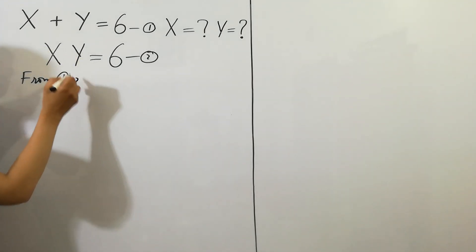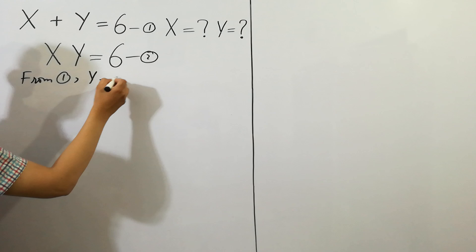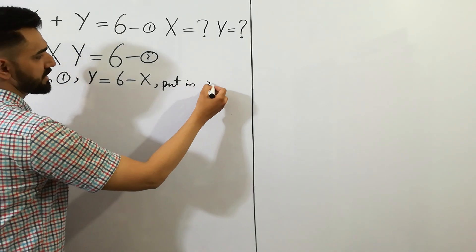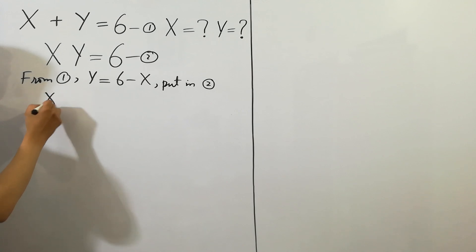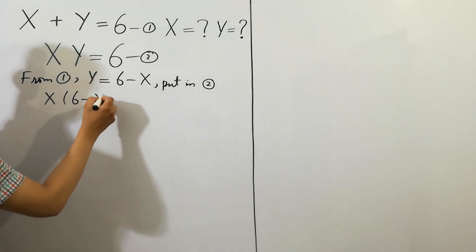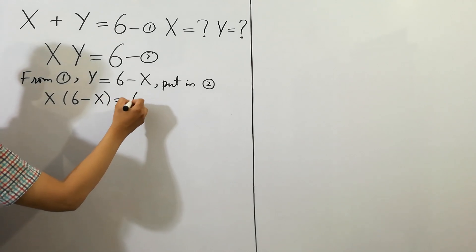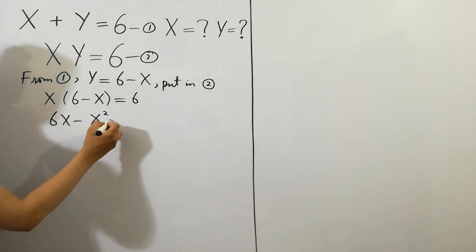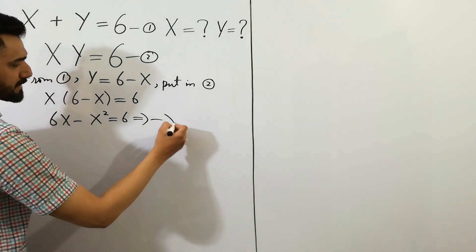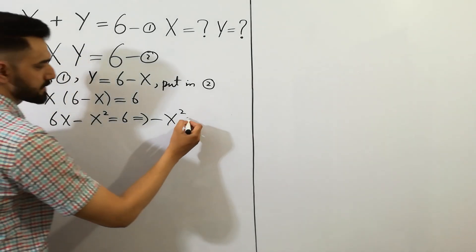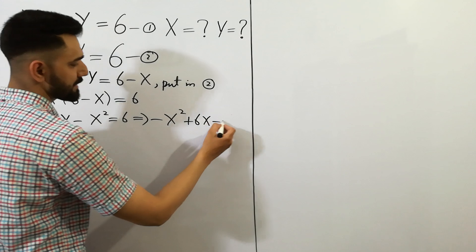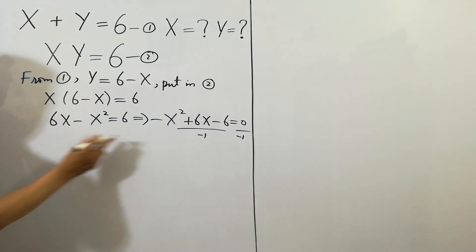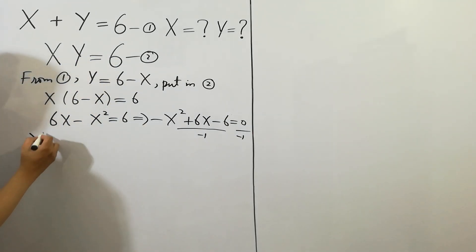From the first equation we can write y is equal to 6 minus x. Putting this into the second equation, we get x times (6 minus x) is equal to 6, which gives us 6x minus x squared is equal to 6. Rearranging: minus x squared plus 6x minus 6 is equal to 0.